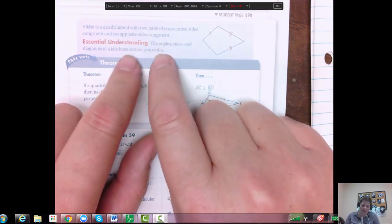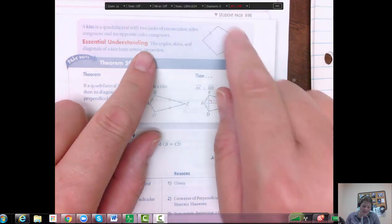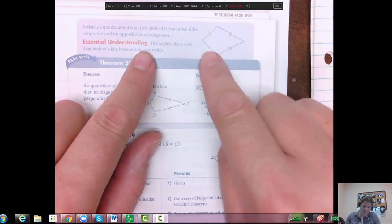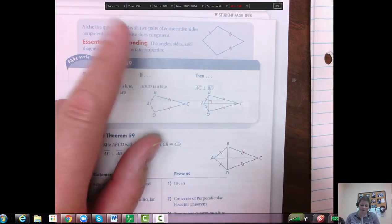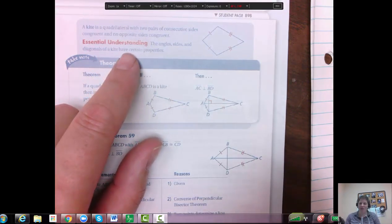Another way that I've seen this defined is you have adjacent sides congruent. So this side's congruent to this one, this one's congruent to this one. And that's our definition. That's it.